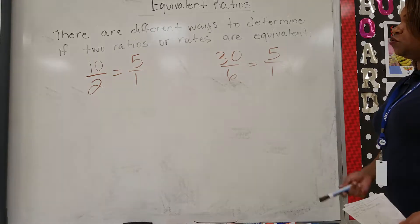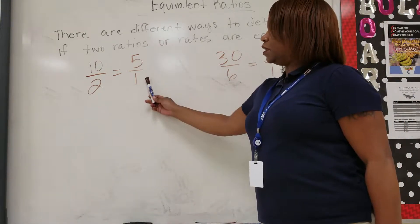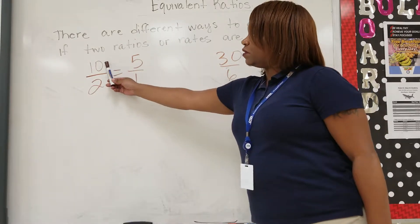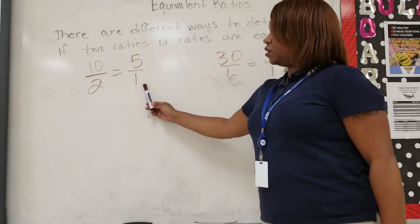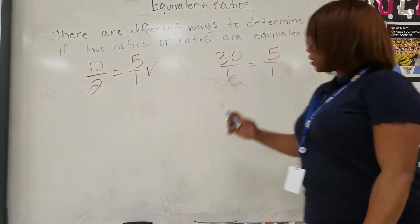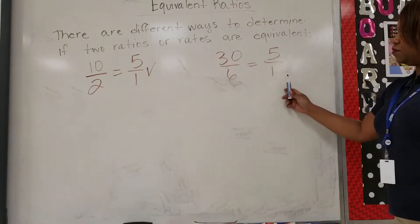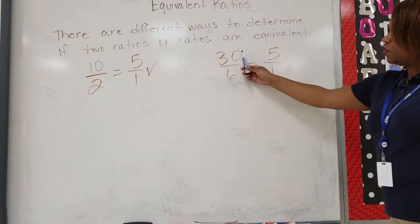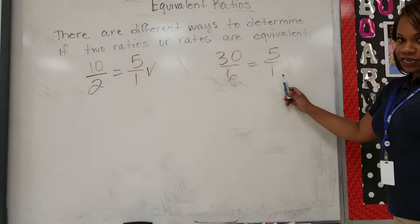...if two ratios are equivalent is using the unit rate. Okay, so if 10 to 2 can reduce to 5 to 1, then yes it is equivalent. Same here, you have 30 to 6 and 5 to 1. Again, here is our unit rate. If 30 to 6 can reduce to 5 to 1, then it is equivalent.